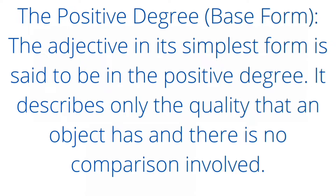First point is the positive degree. जब adjective simple form में होता है, तब उसे positive degree कहते हैं. For example: tall, short, bold.